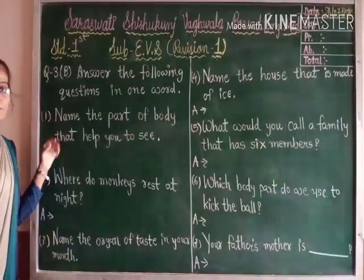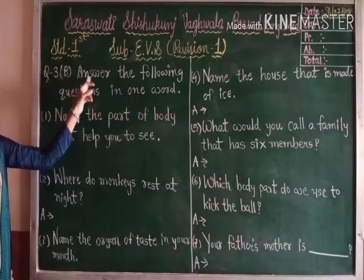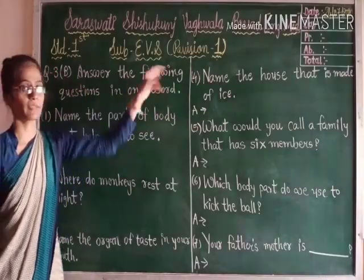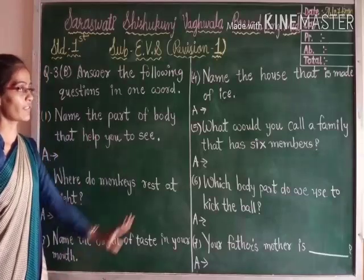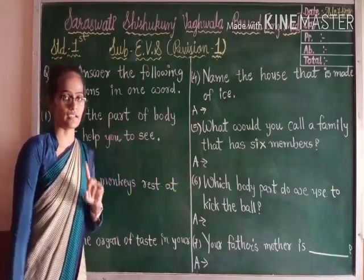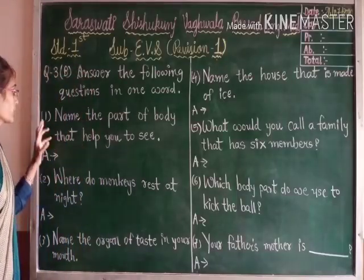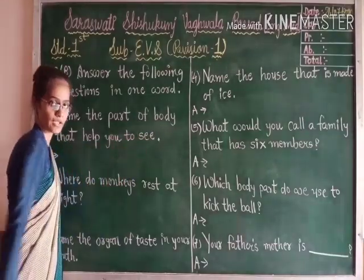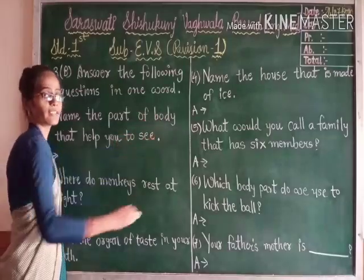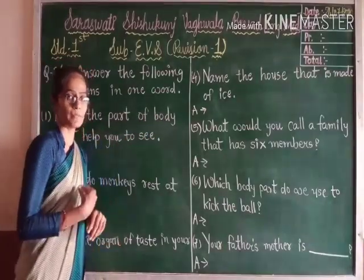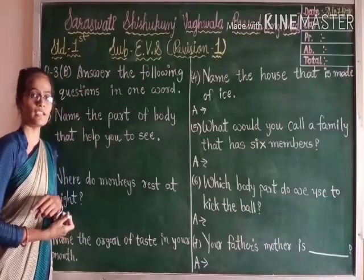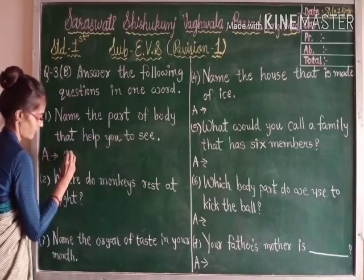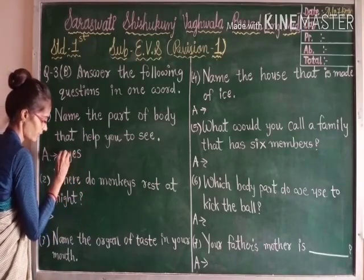Now let's see one more question — Question 3B: answer the following questions in one word. Question 1: name the part of the body that helps you to see. Eyes help us to see, so the answer is eyes.